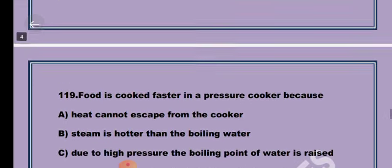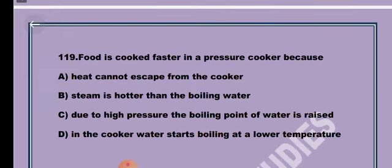Question 19. Food is cooked fast in pressure cooker because Option C, due to high pressure the boiling point of water is raised.